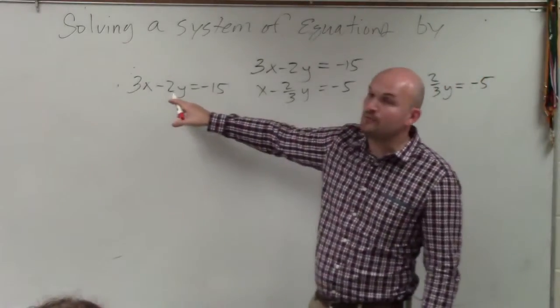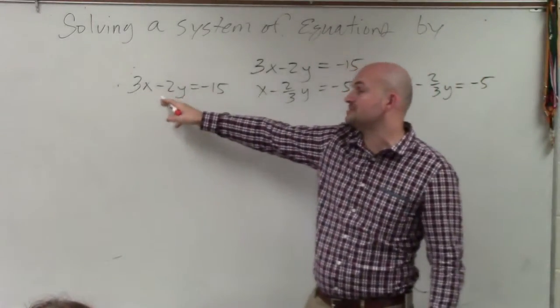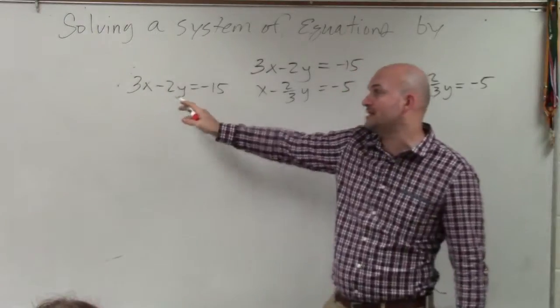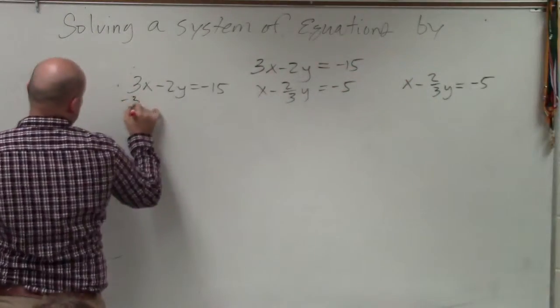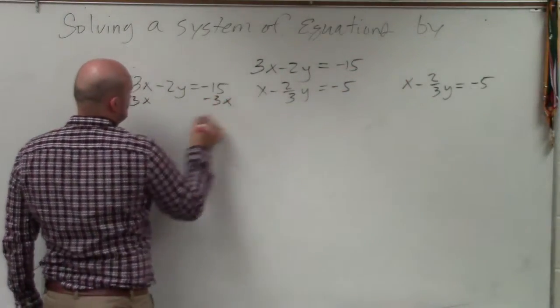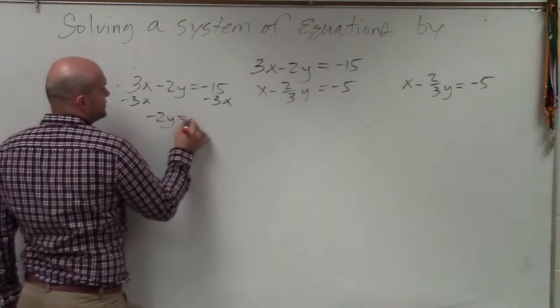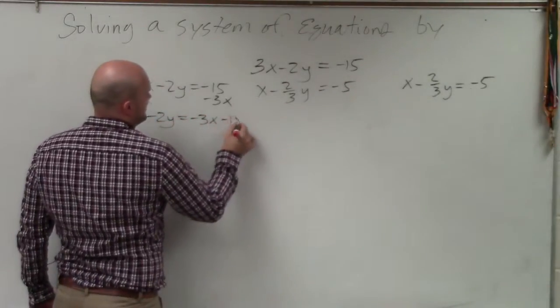So the first equation, you can see my y is being multiplied by 3, or I'm sorry, added by 3 and being multiplied by negative 2. So I'll subtract the 3x. And that leaves me with negative 2y equals negative 3x minus 15.